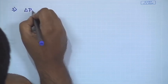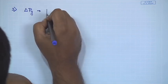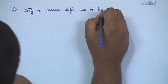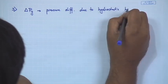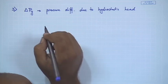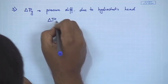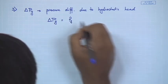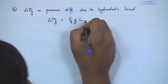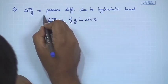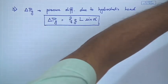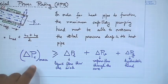The third term, ΔP_g, is the pressure difference due to the hydrostatic head. For our geometry with inclination angle alpha, this is simply: ΔP_g = ρ_l · g · L · sin(α).